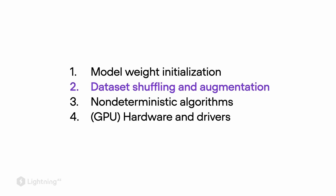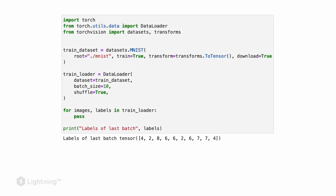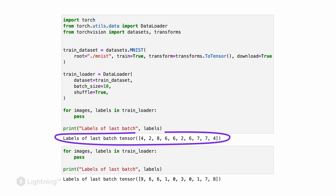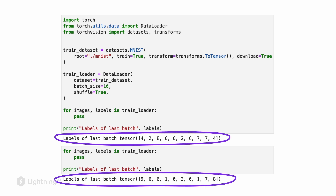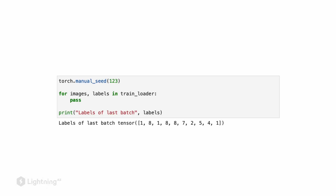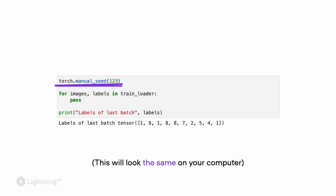Let's now talk about data shuffling as another source of randomness and how we can control for it. Suppose we have our training data loader as shown here — each time we iterate over the training data loader it will return different labels. To address this issue and ensure that the data is shuffled exactly the same way on every machine, you can also seed the random number generator by calling torch.manual_seed and providing an integer value to fix the random seed.